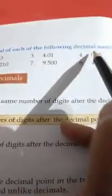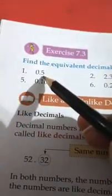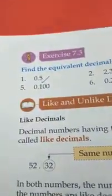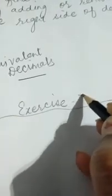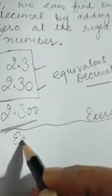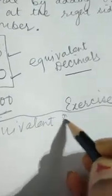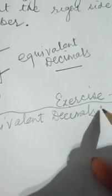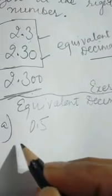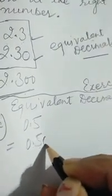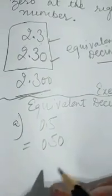In this exercise we have to find out the equivalent decimals of each of the following decimal numbers. We are doing exercise 7.3, equivalent decimals. Part a is 0.5 — its equivalent decimal will be 0.50.